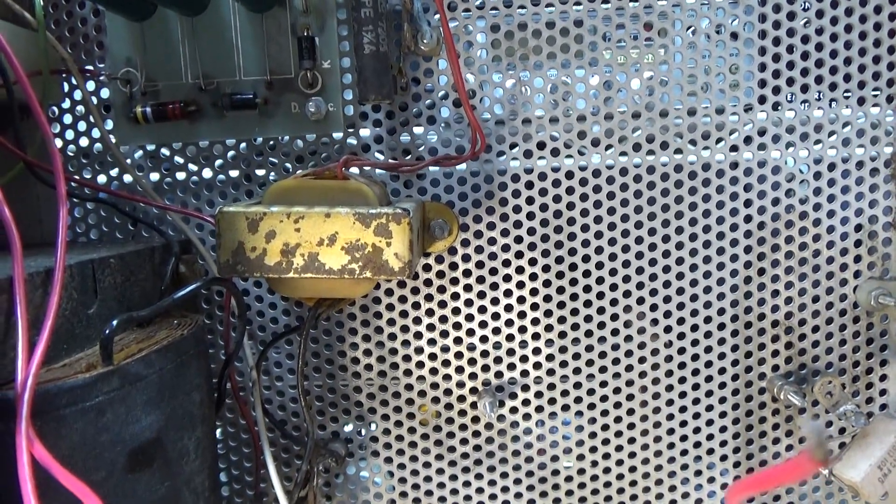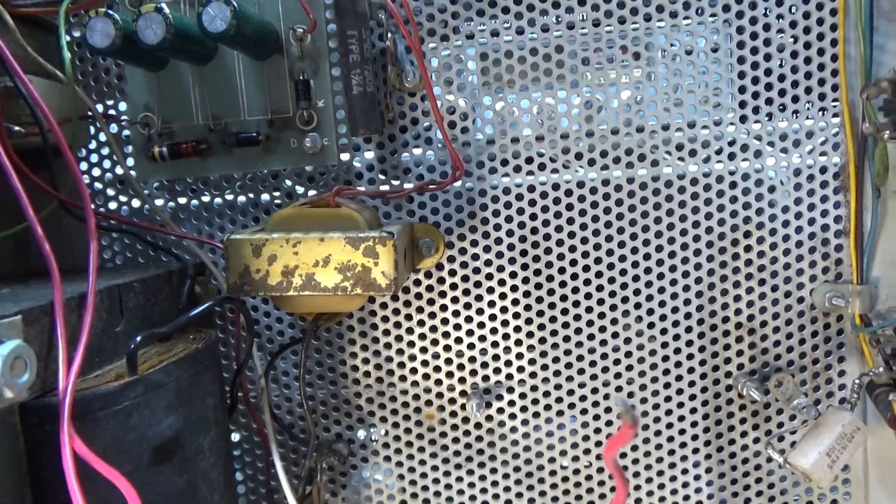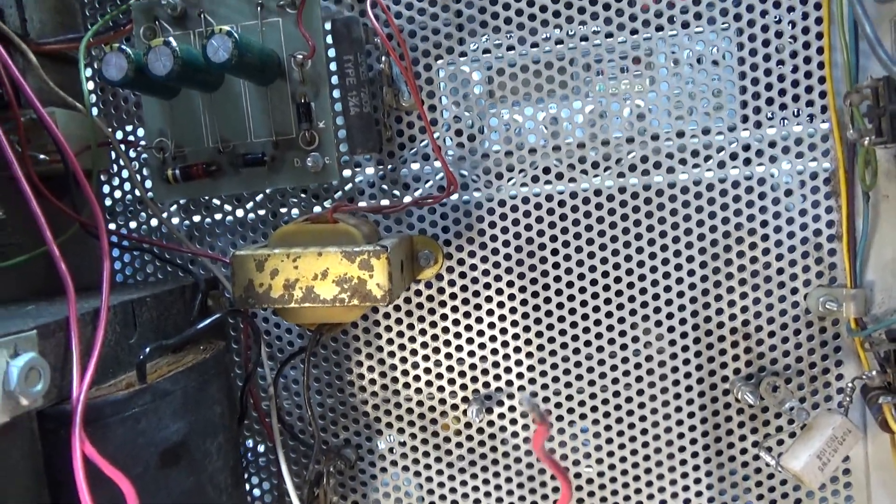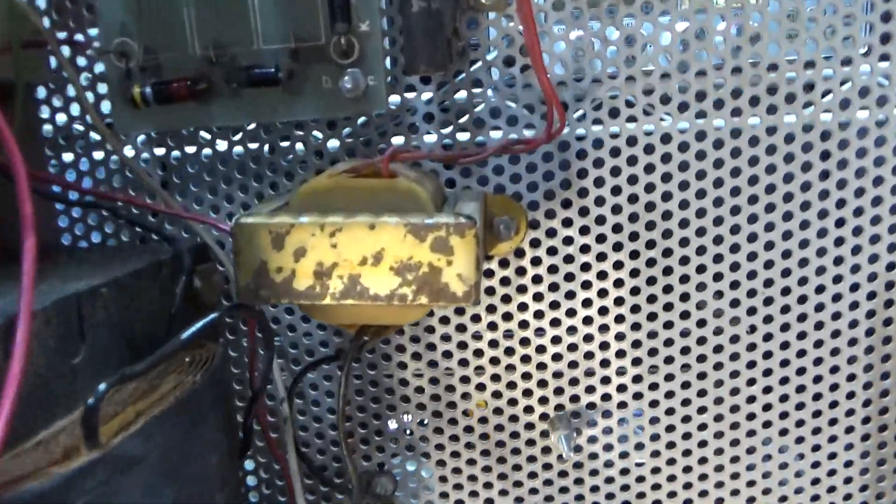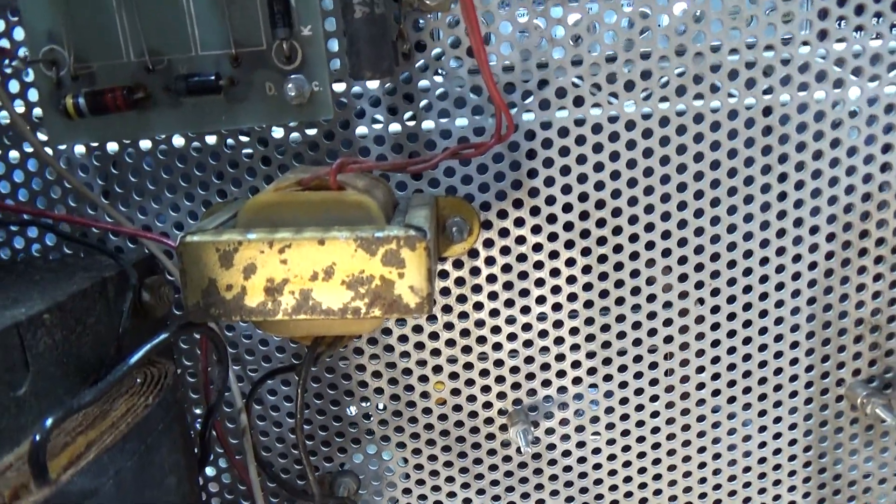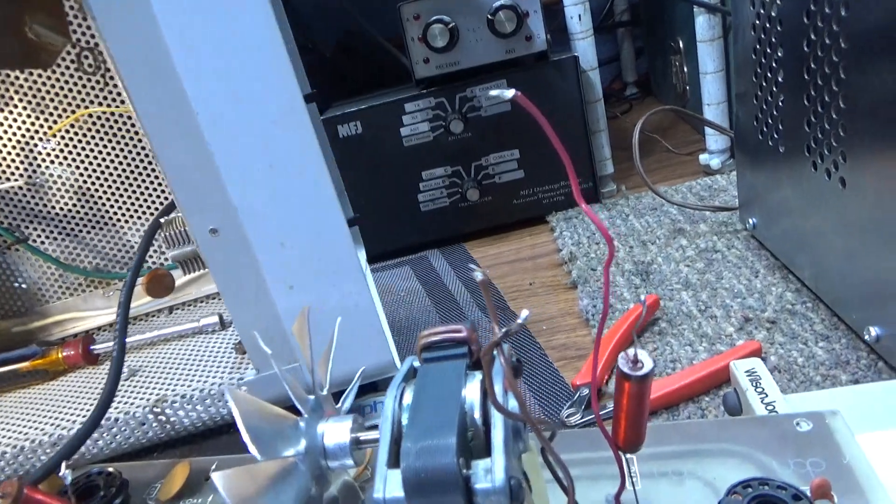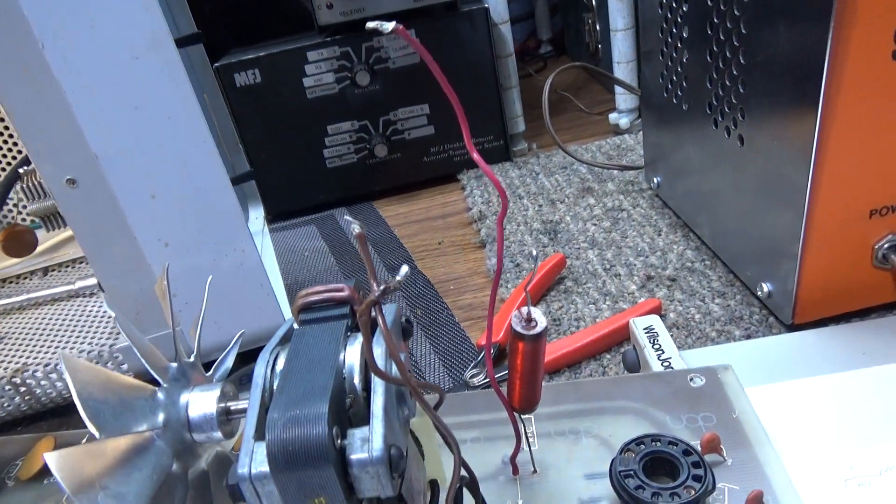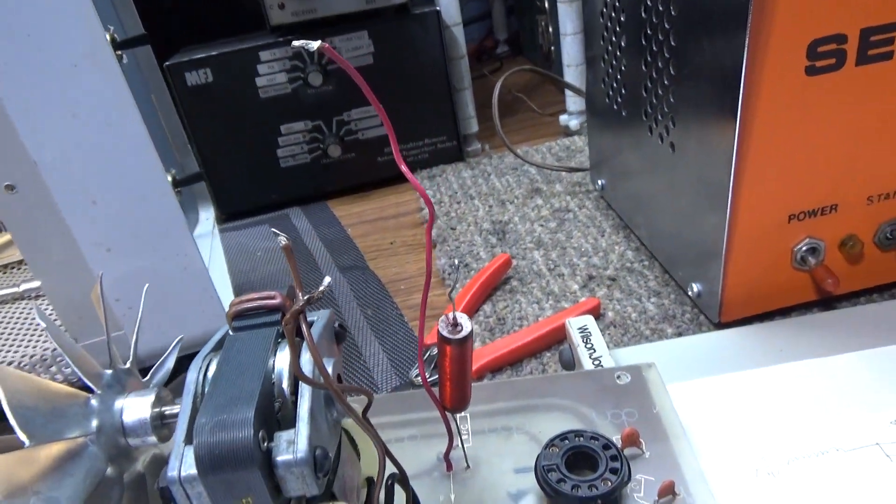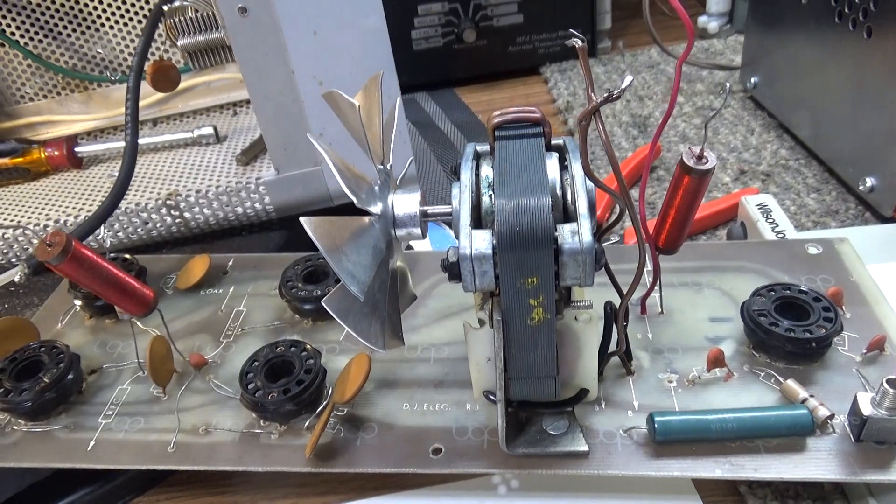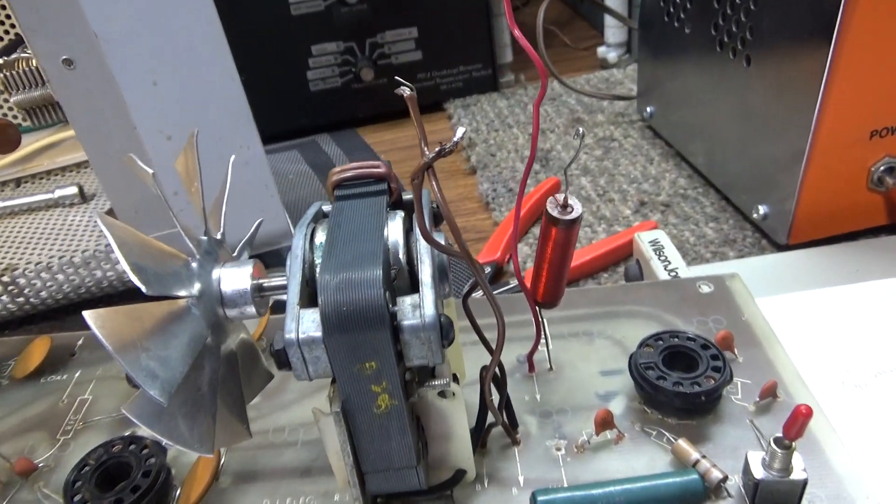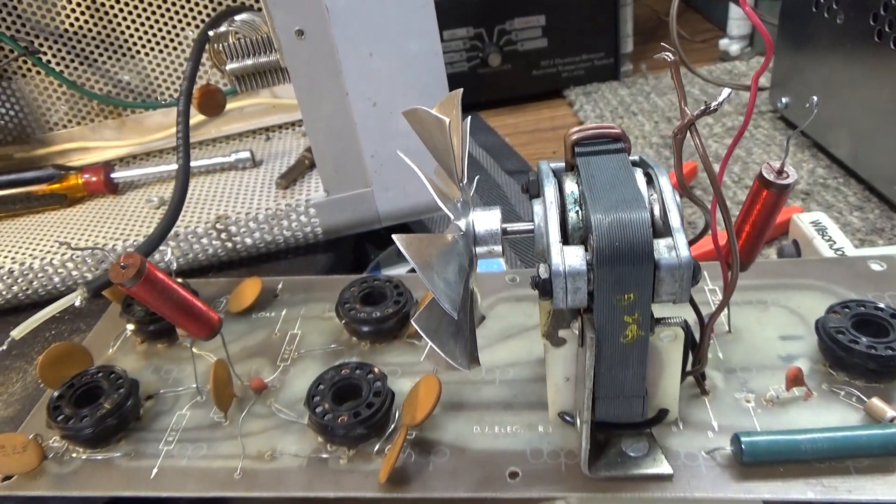That little low voltage transformer there only runs the low voltage circuitry - the preamp and the key-in circuit. That's all that little low voltage goes to, that's why it's so small.